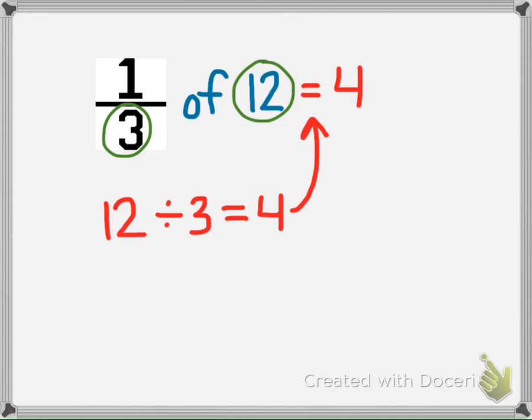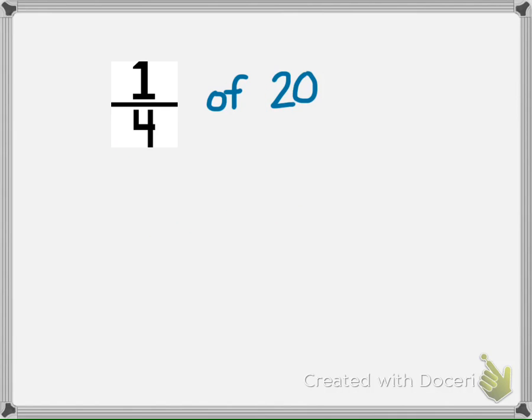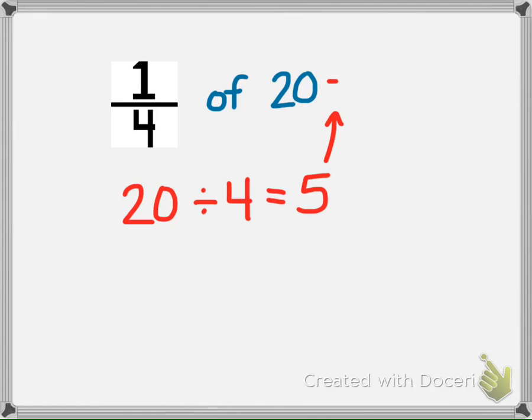You can use division to find the fraction of a set. Try one more. What is one-fourth of 20? To find the fraction of the set, just divide 20 by 4. 20 divided by 4 equals 5, so one-fourth of a set of 20 things is 5. With more practice, you'll soon be quickly finding fractions of a set.